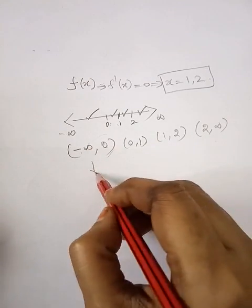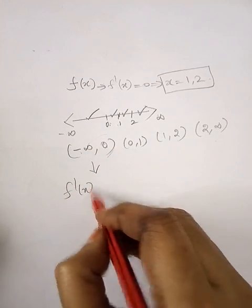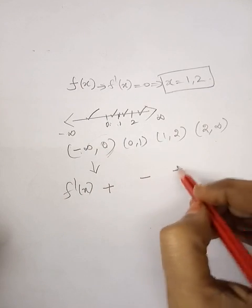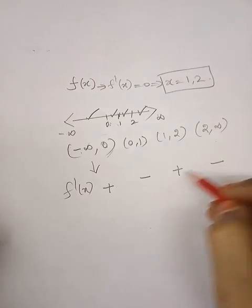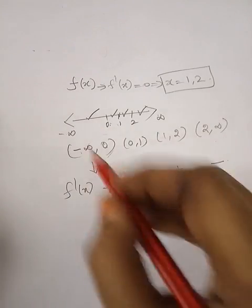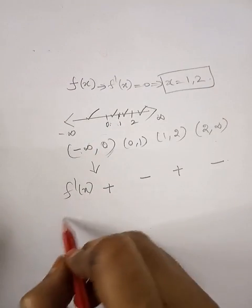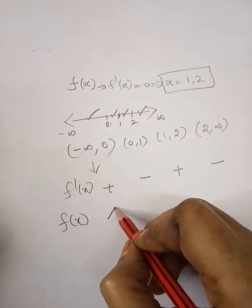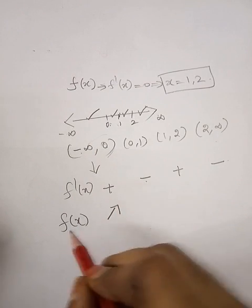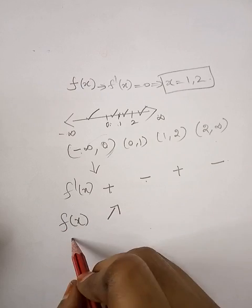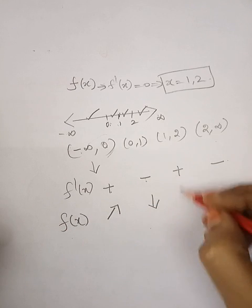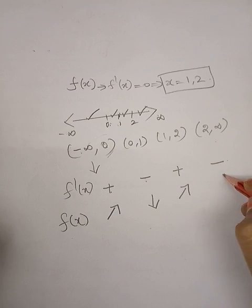For each interval, check the value of f'(x). Suppose you get plus, minus, plus, minus in the four intervals. Then f(x) is strictly increasing where f'(x) is positive, and strictly decreasing where f'(x) is negative.